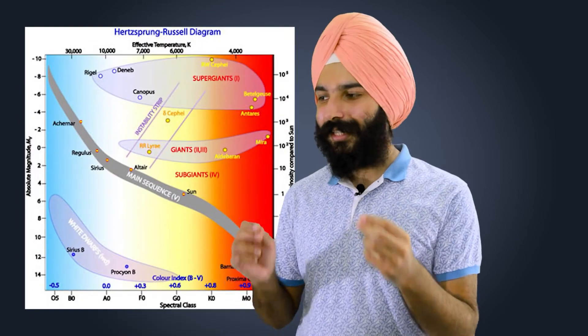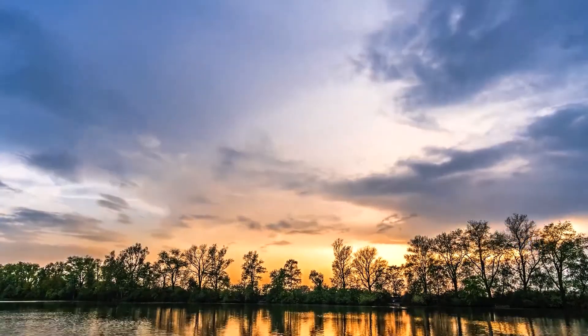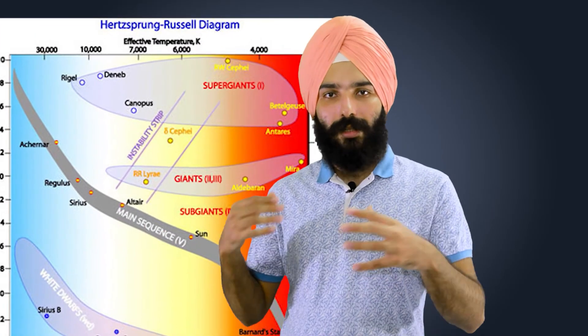Now coming to the diagram, you can see this is the line of the main sequence stars. Our sun is, for example, also a main sequence star. And the stars above and below this line are actually on the extreme end, which are the giants and the dwarfs.